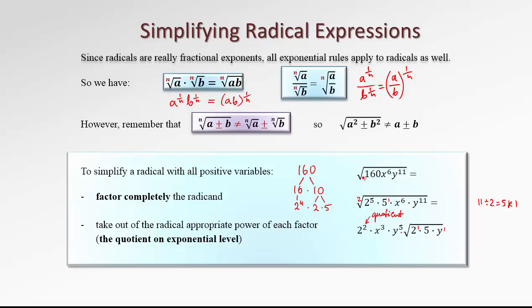To summarize: factor everything completely, then perform division on the exponential level. Take the exponent, divide by the index of the radical, and the quotient of this division goes out of the radical as an exponent. However, the remainder stays as the exponent under the radical.